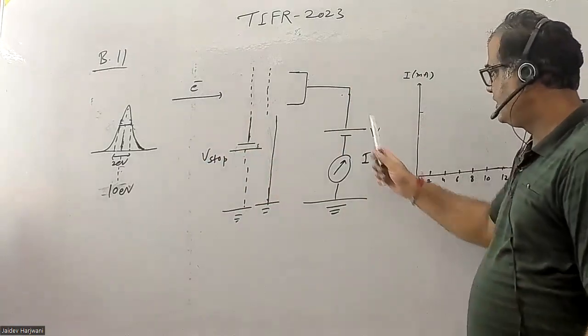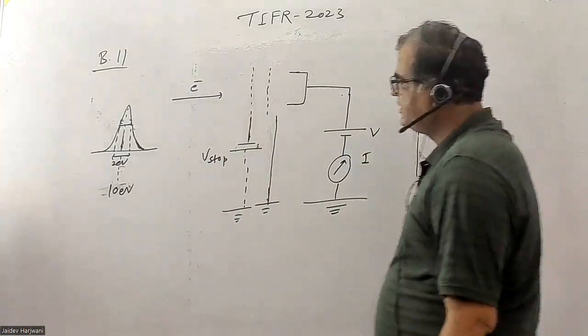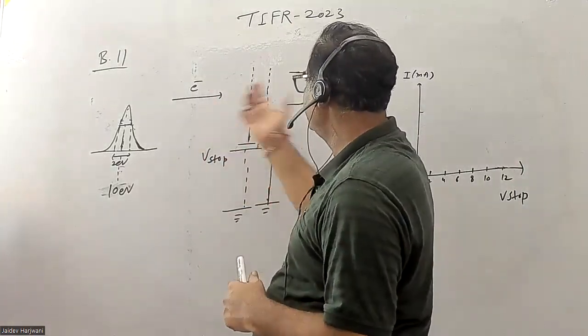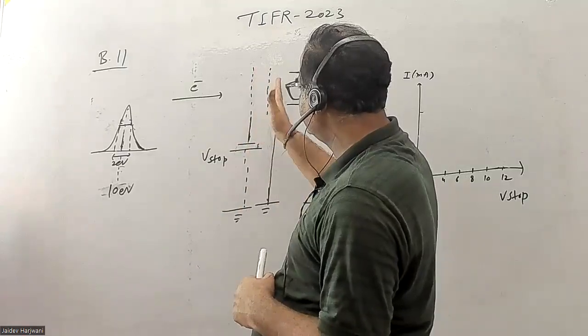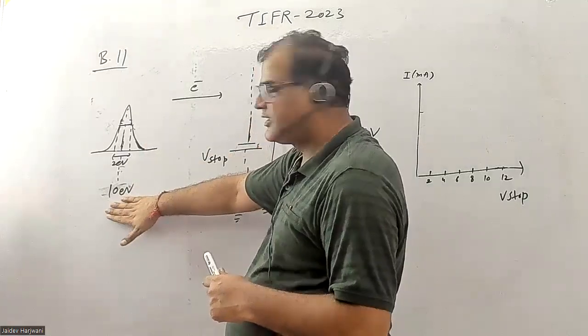The electron beam is collected by this setup and you measure the current. The electron beam which is getting incident on this setup has grids, and the energy of this electron beam is centered around 10 electron volts.